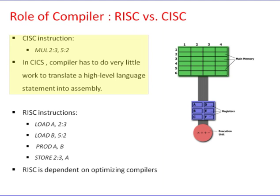CISC approach. The primary goal of CISC architecture is to complete a task in as few lines of assembly as possible, achieved by building processor hardware capable of understanding and executing a series of operations. For this task, a CISC processor would use a specific instruction, say MUL. When executed, this instruction loads two values into separate registers, multiplies the operands in the execution unit, and stores the product in the appropriate register. The entire task of multiplying two numbers can be completed with one instruction: MUL 2:3, 5:2. MUL is known as a complex instruction.